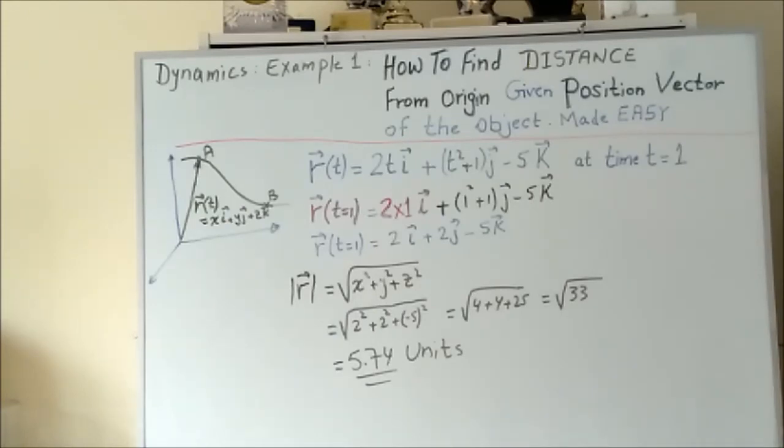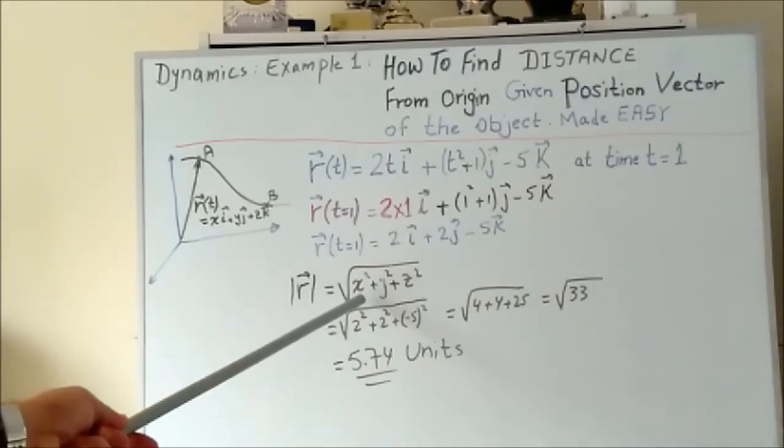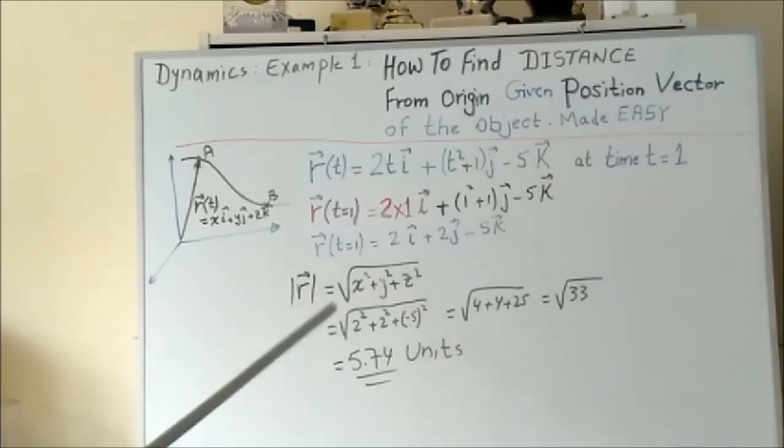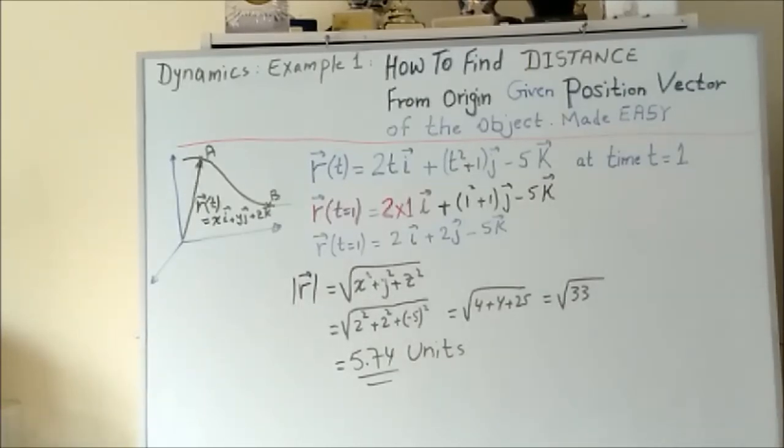Now to find the distance, all we have to do is take the square root of the sum of the squares of the coordinates. We write |r|—the absolute value tells you the length of the vector or the distance from the origin to point A.